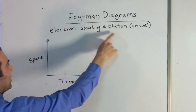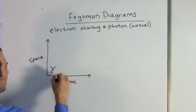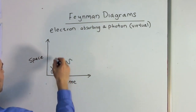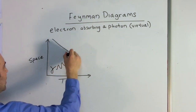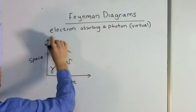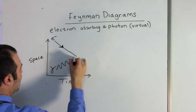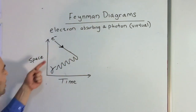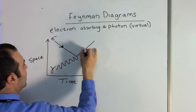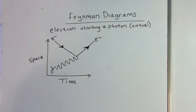If we want to have an electron absorbing a photon, we need to draw that photon coming in. We'll draw our gamma symbol here and draw that photon coming in. As time is passing, something is getting closer — that's going to be our electron. Our electron is going to come closer, and at the point where they meet, the photon is absorbed, and the electron is going to change direction and go off this way after absorbing that photon.